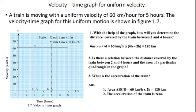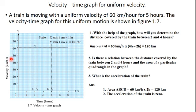Welcome, dear students. Now we will see the next point: velocity-time graph for uniform velocity. A train is moving with a uniform velocity of 60 kilometers per hour for 5 hours. The graph shows velocity in kilometers per hour on the y-axis and time in hours on the x-axis.